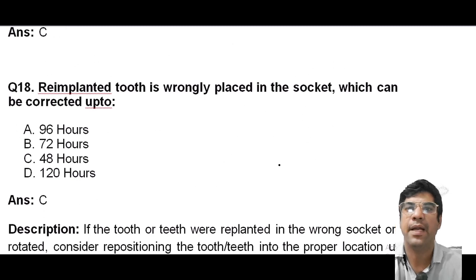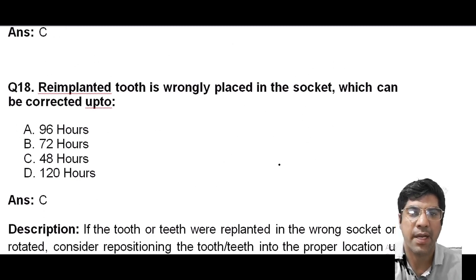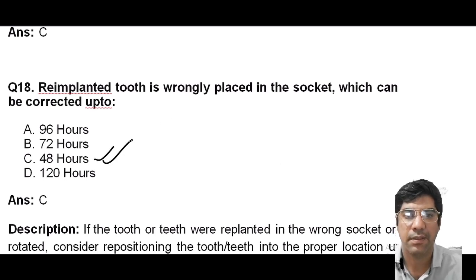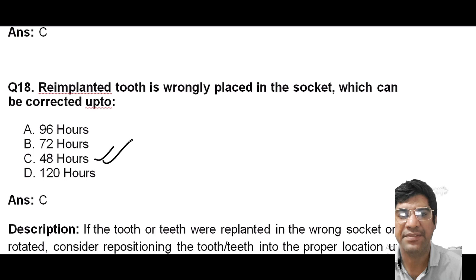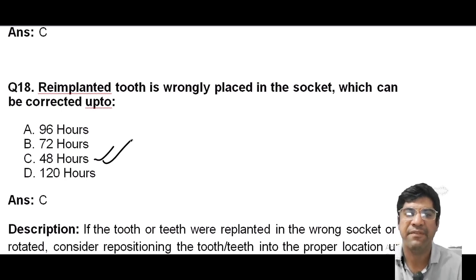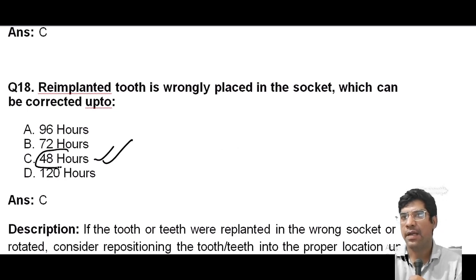A re-implanted tooth that is wrongly placed in the socket can be corrected up to 48 hours. After a traumatic incident where a tooth is re-implanted but placed incorrectly, there is a limited window of time during which correction can be made — usually 48 hours.